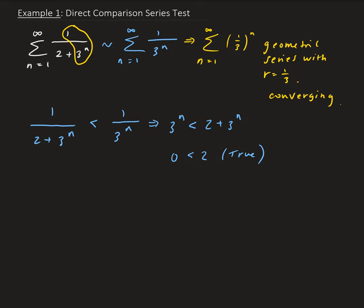So therefore, since one over three to the n converges, so this is acting as a bound. So since this series converges, therefore,